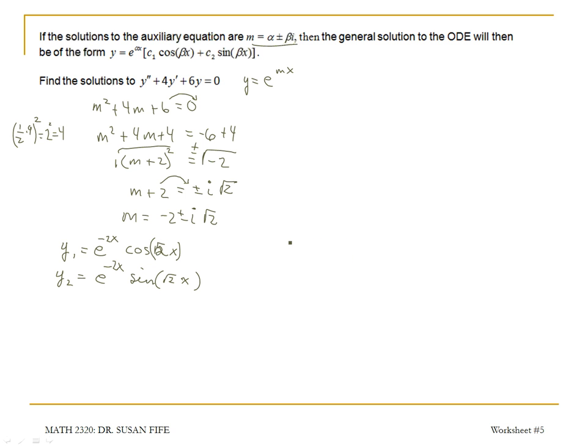So my general solution, I could factor out that e to the negative 2x. I'll have one constant times the cosine plus another constant times the sine. And there's our answer.